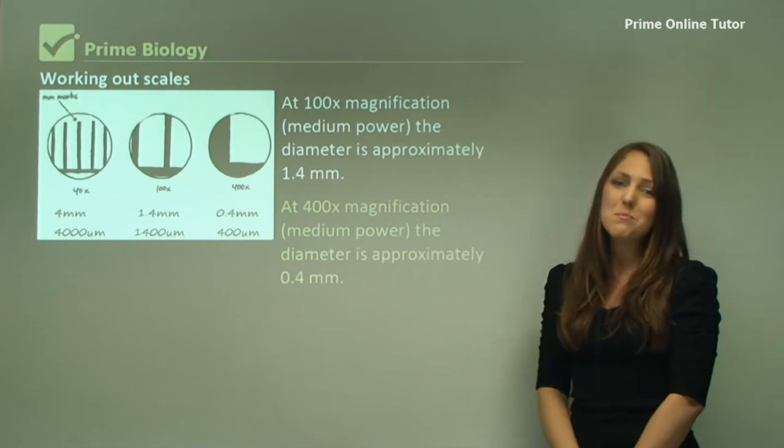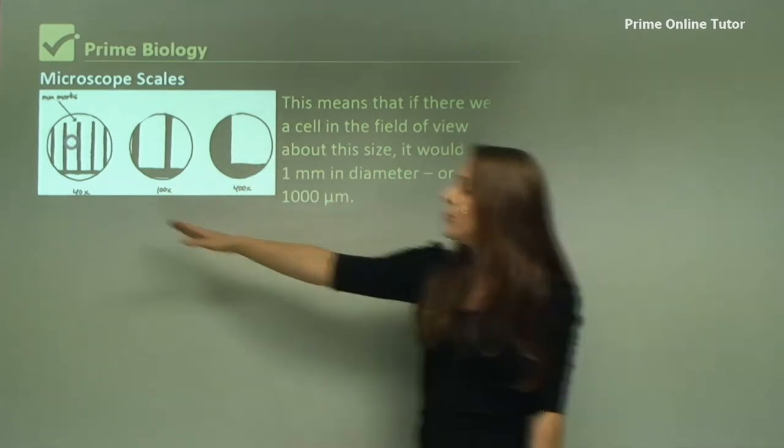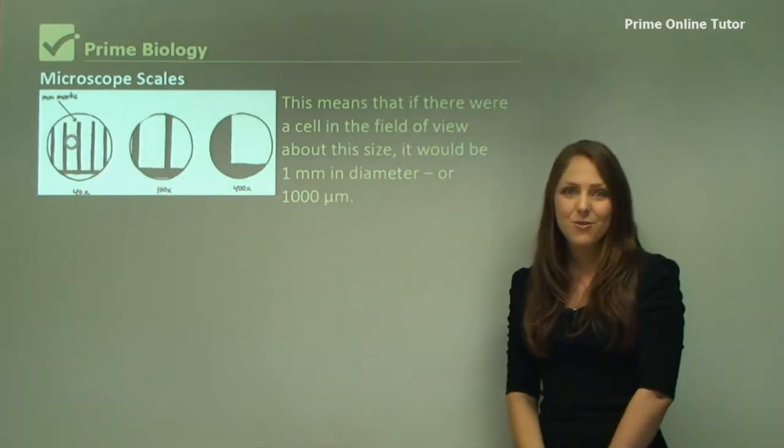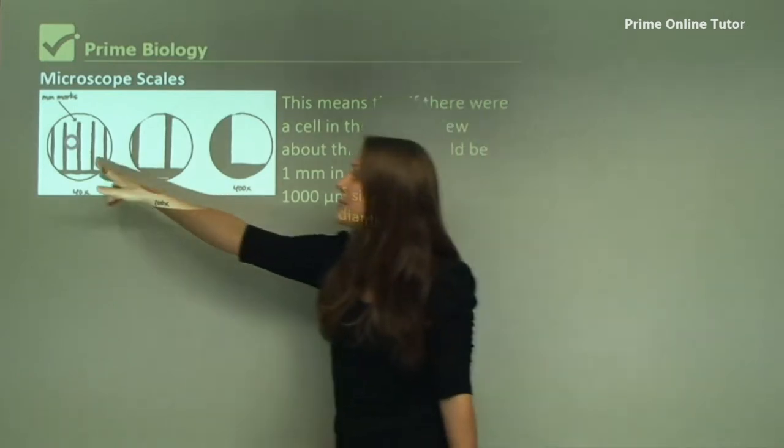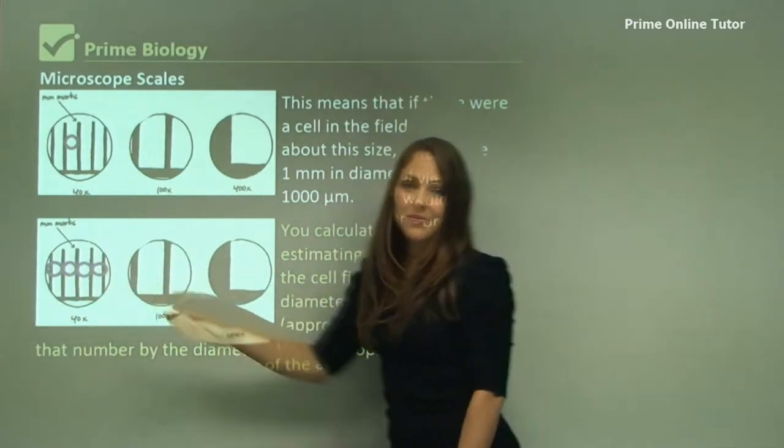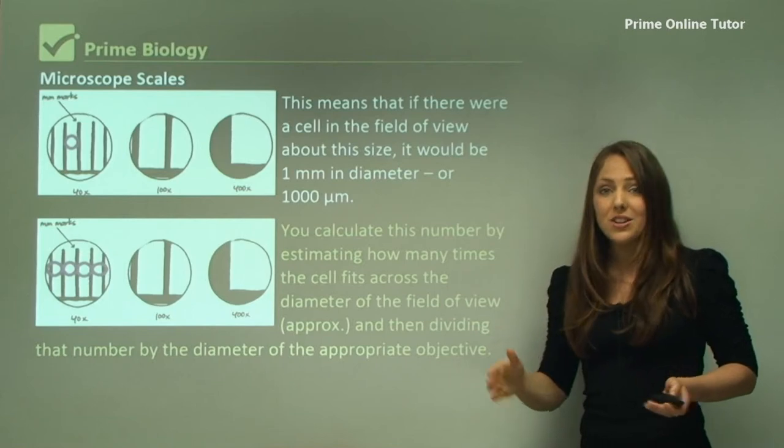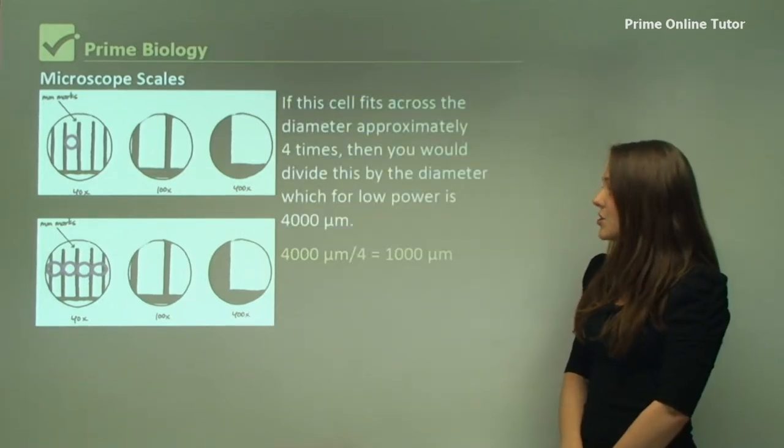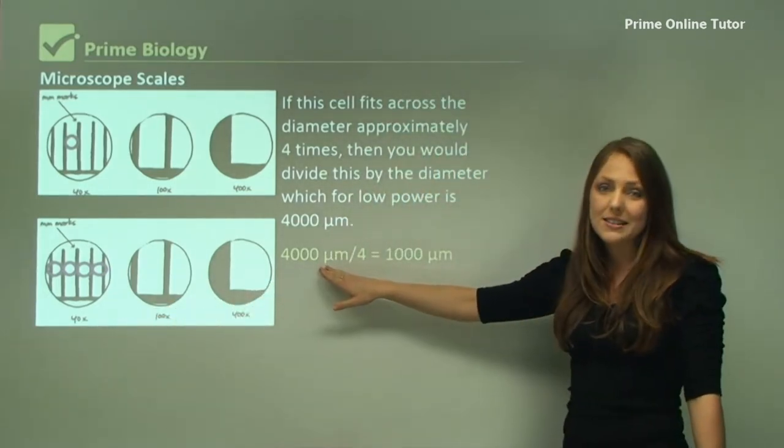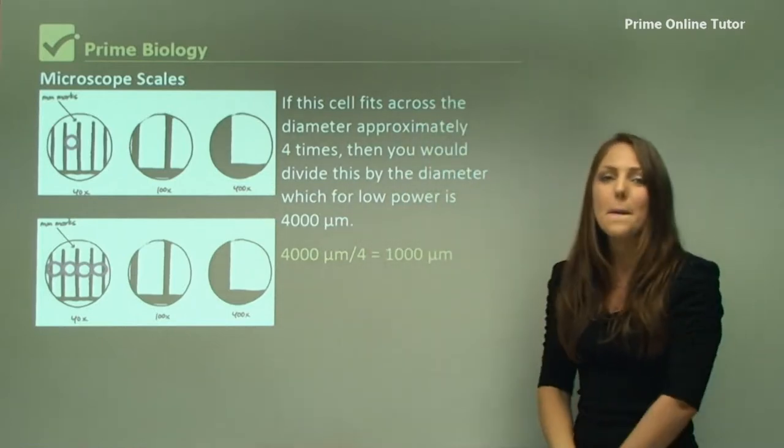When we work out the scales, we work it out in micrometers. For this cell here that I've just drawn on the 40x total magnification, to work out its size, you don't have a ruler there every time. You need to work out how many times does this cell fit across that diameter, and it's approximately 4 times. If you estimate the size of that cell, you need to work out the total diameter divided by how many times it fits across. 4000 is the diameter for the 40 times, it's 4000 micrometers. So you divide that by 4, which equals 1000 micrometers. This cell is 1000 micrometers in diameter.